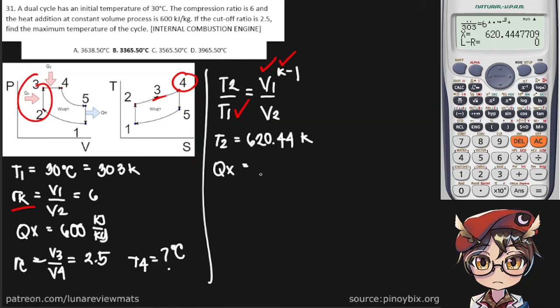And the formula for Qx is simply the mass times the specific heat ratio at constant volume, multiplied by the change in temperature, which is T3 minus T2.